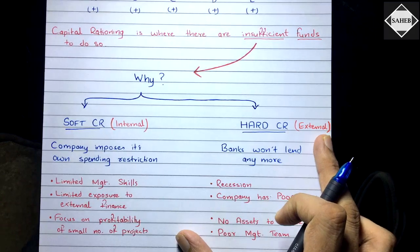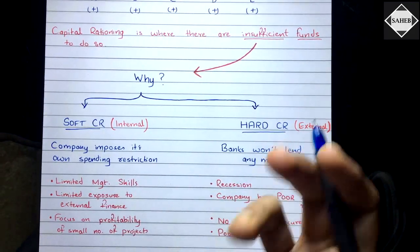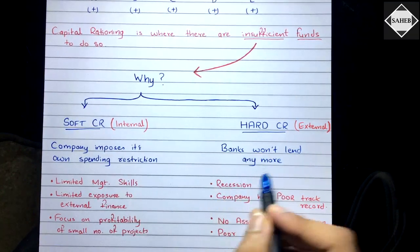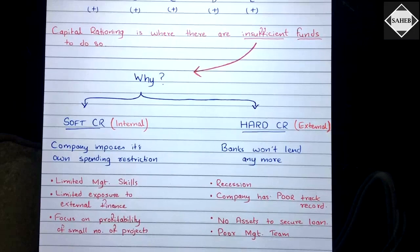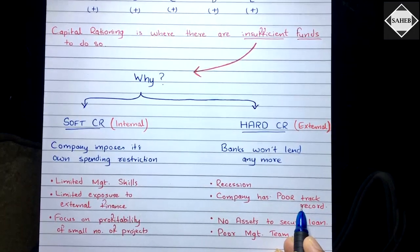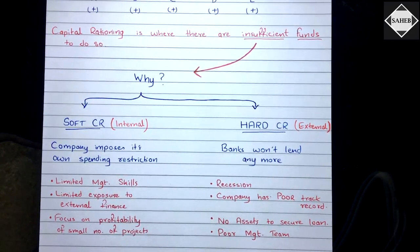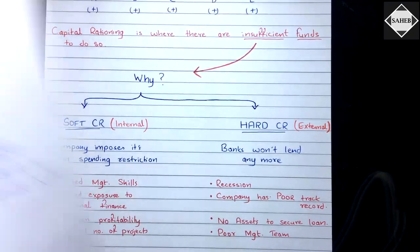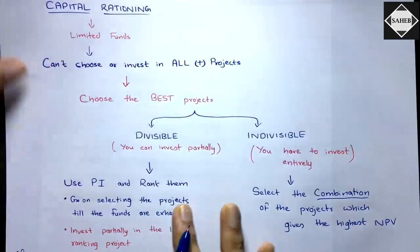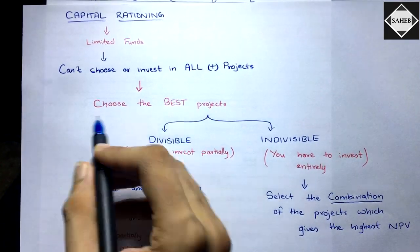Hard capital rationing refers to external reasons — the company cannot get funds from outside. For example, banks may not lend due to a recession, the company may have a poor credit rating or track record, insufficient assets to secure a loan, or poor management skills. Because of these external reasons, the company ends up with insufficient funds.